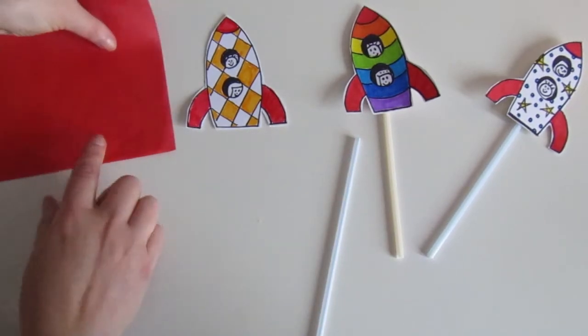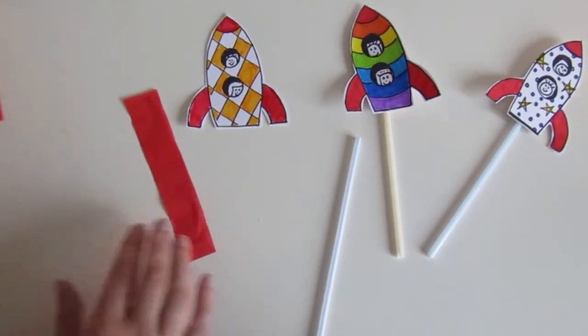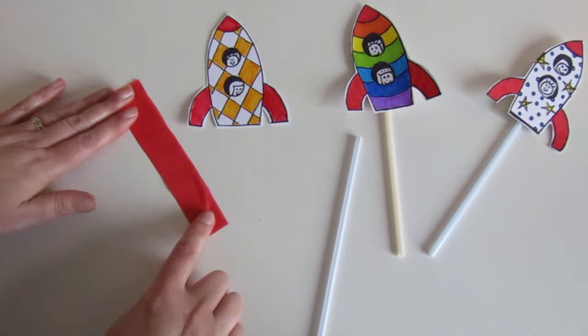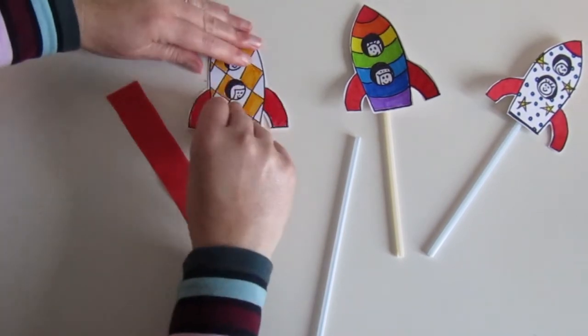So for this you need some tissue paper and here's a strip I have cut earlier. So it's about 15 centimetres long. So the next thing we're going to do,